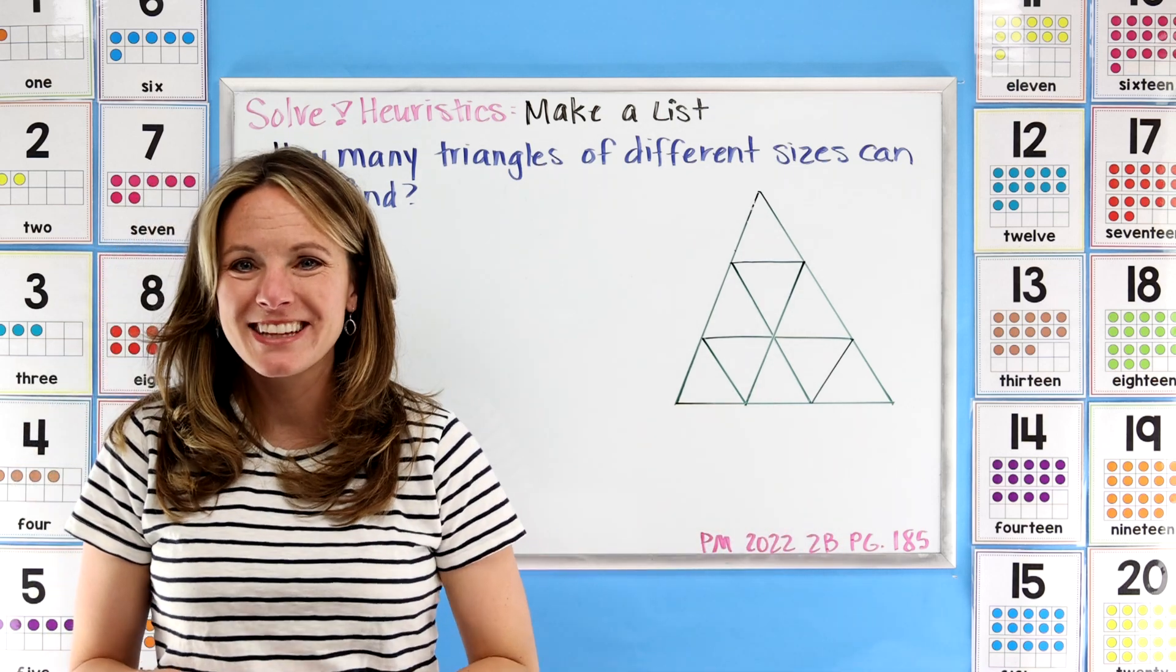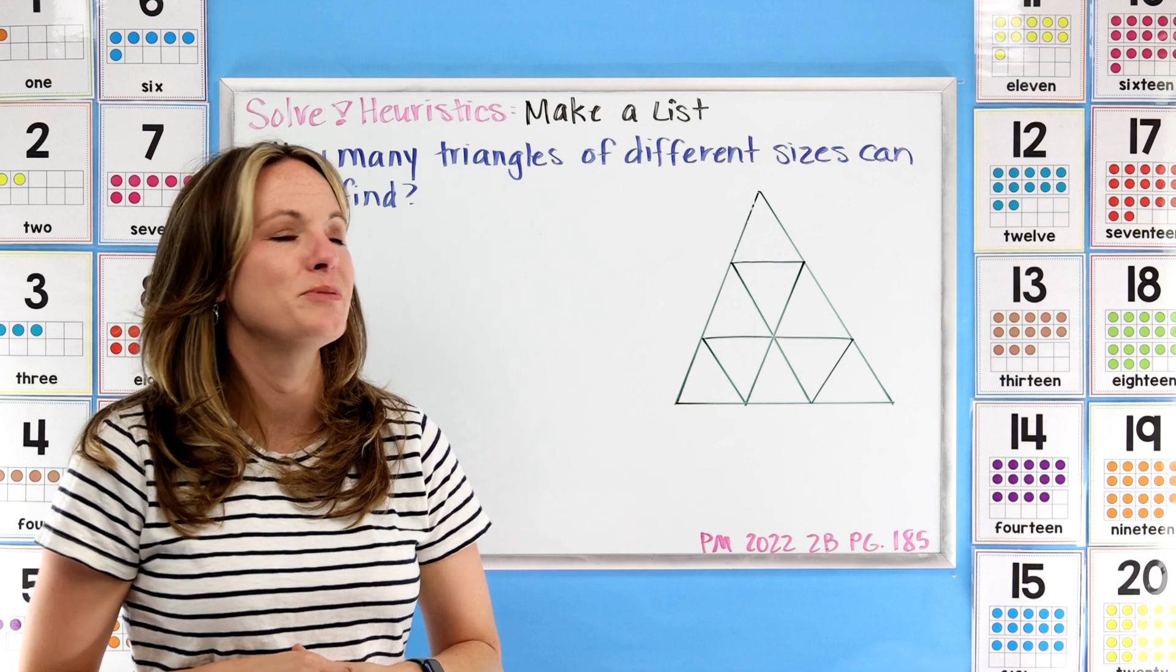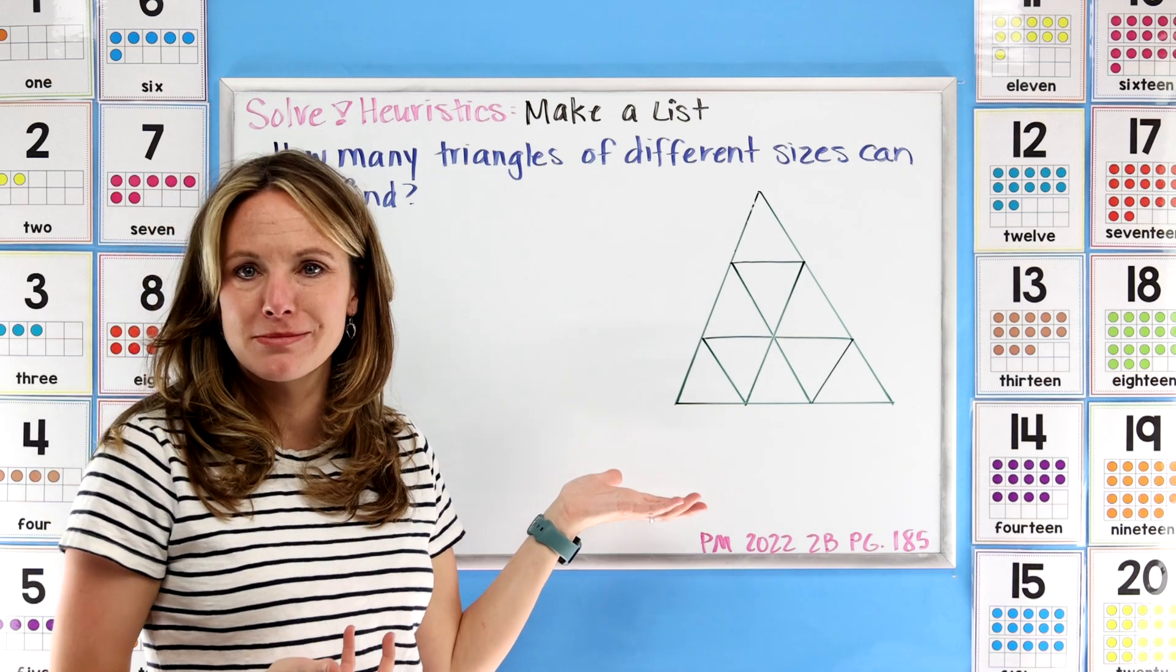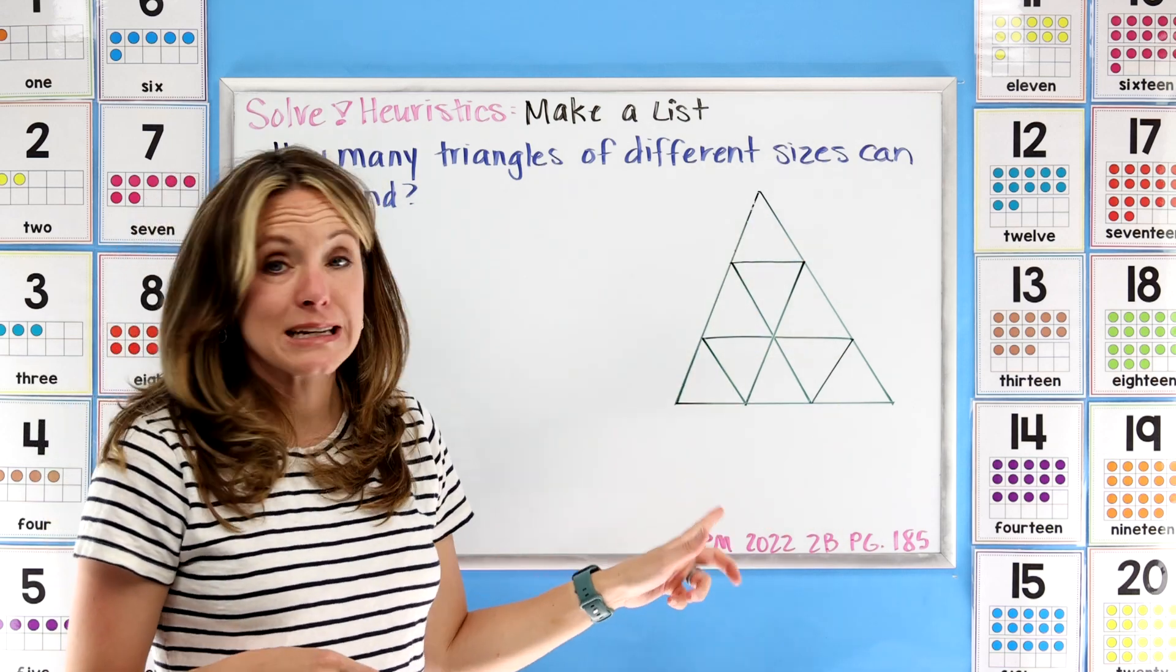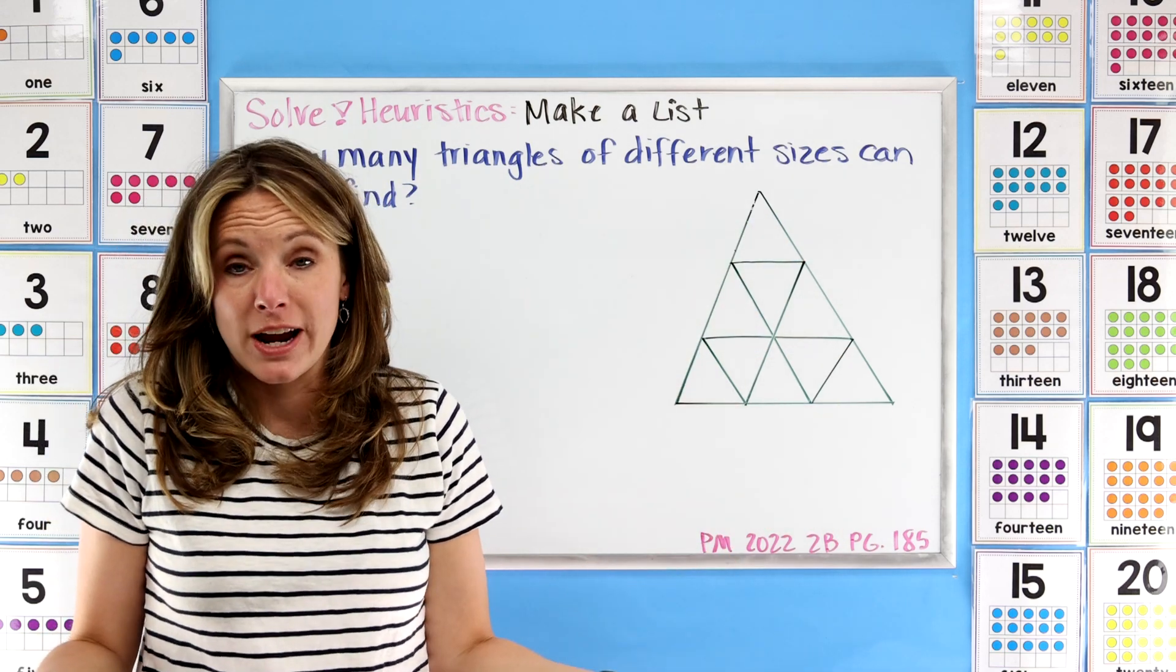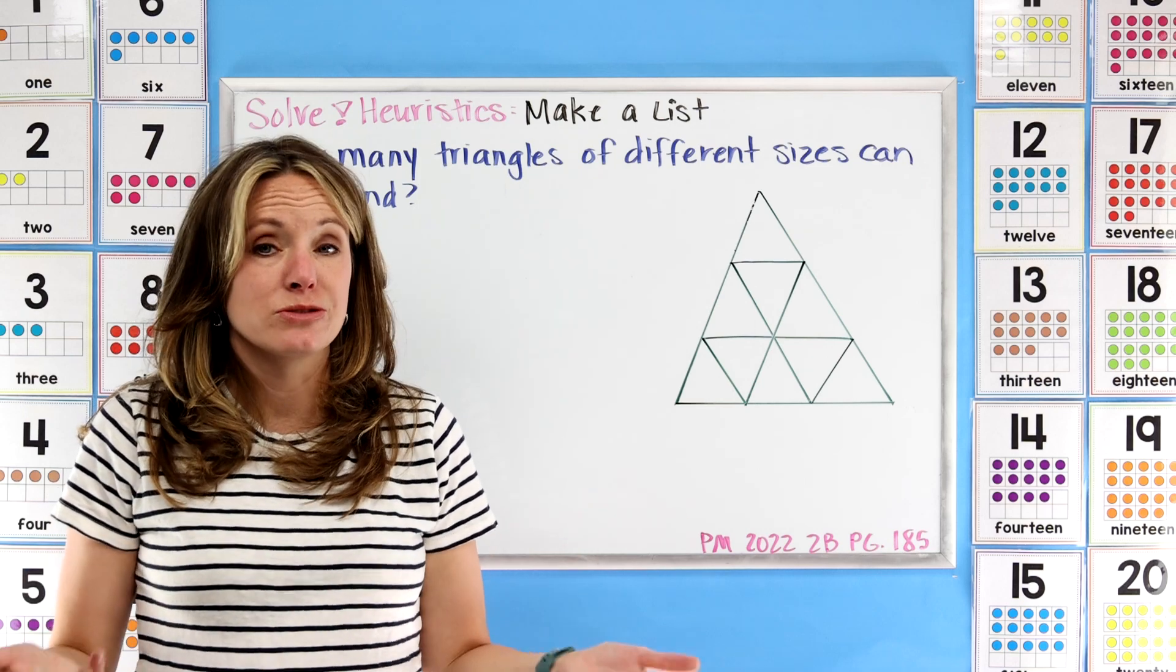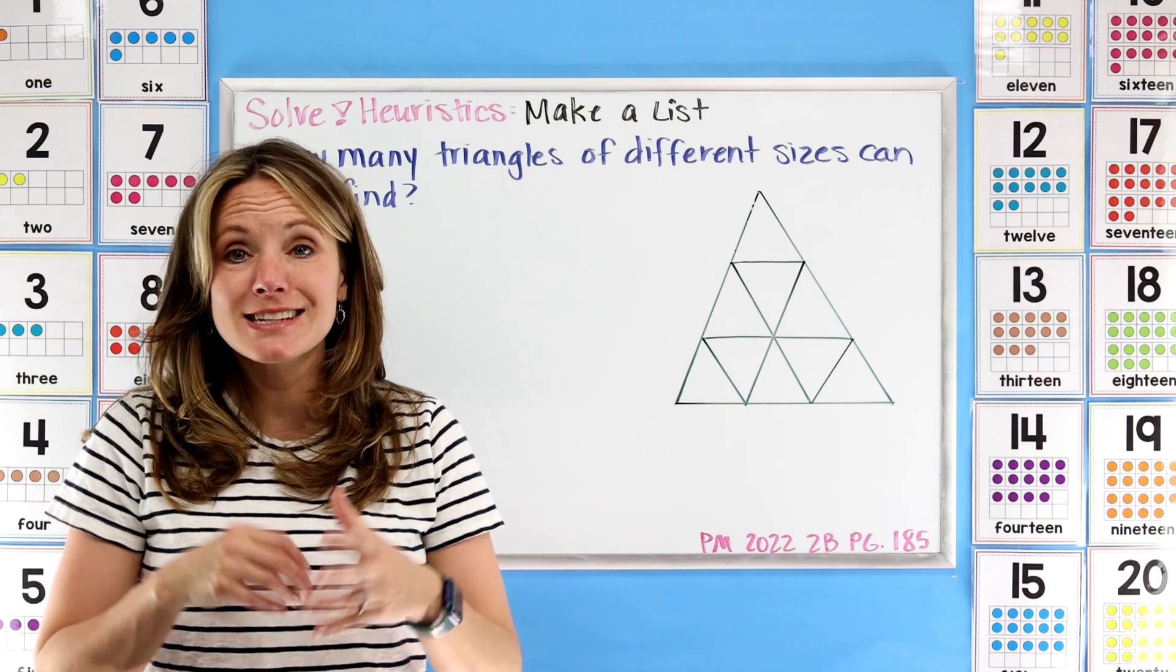Now I drew this to the best of my ability - you have another picture in your student book. But you'll notice a couple things about this. What do you see? There's a big triangle, right? And then it's made up of other smaller triangles. So if we were to describe the number of triangles we can find, that's going to help us to solve this problem.